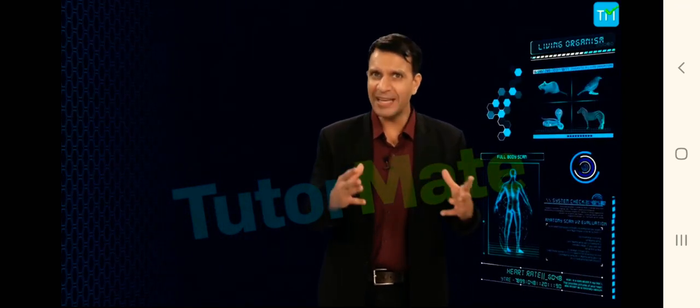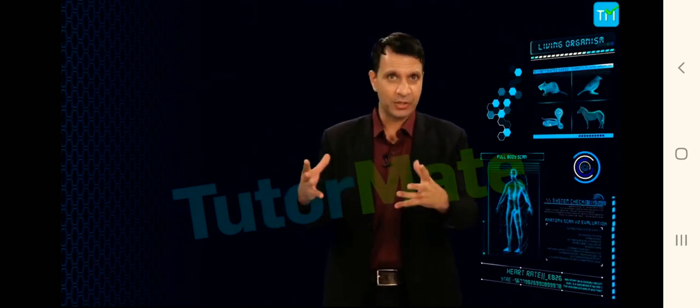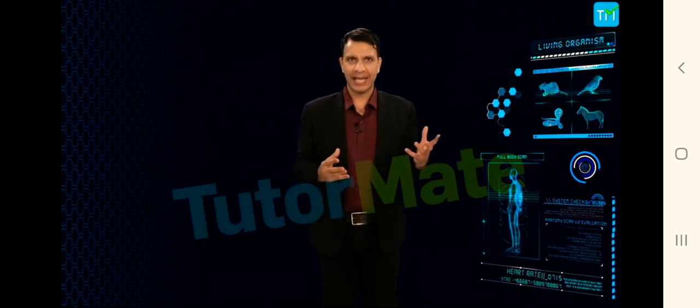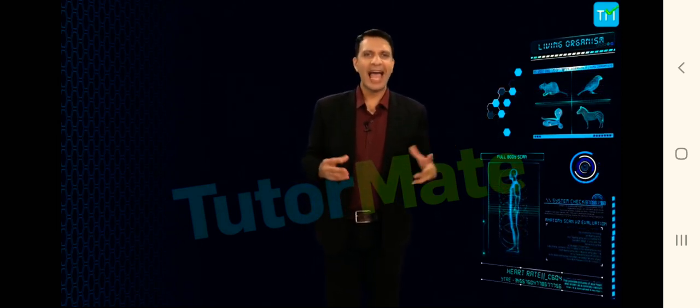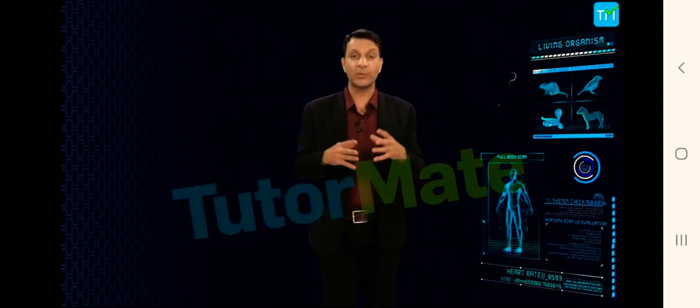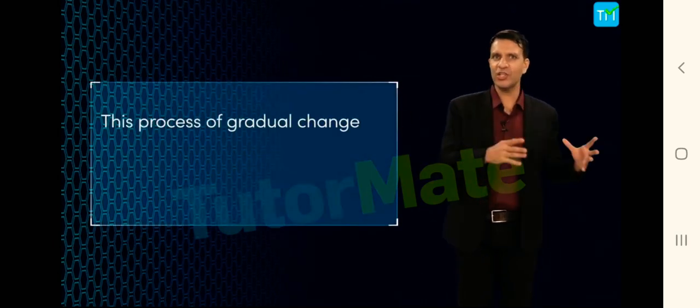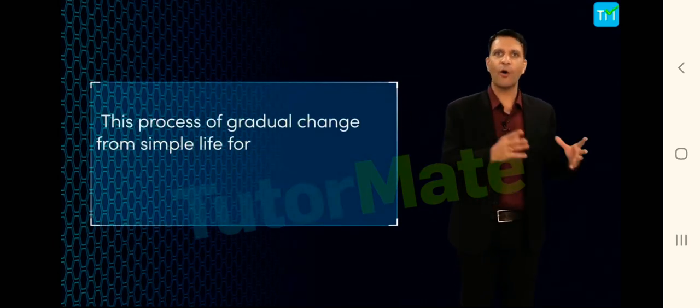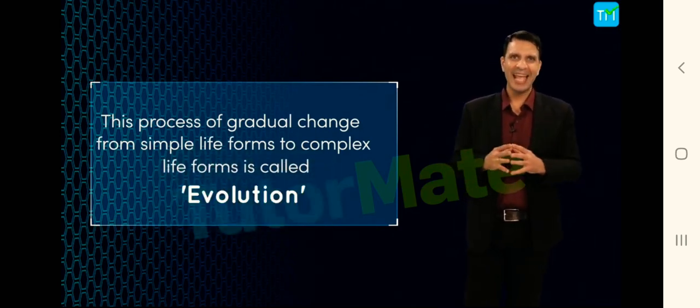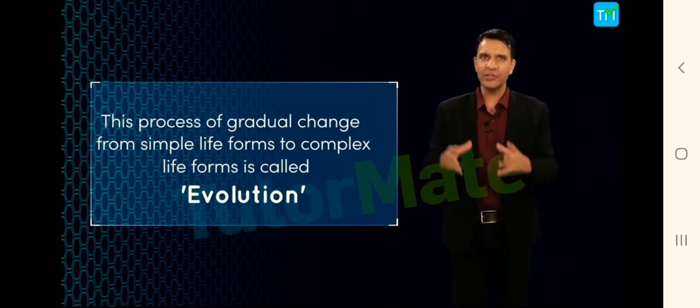They had common ancestors from which they gradually evolved into their present form. The ancestral forms were simple and are called primitive, and primitive organisms have evolved into advanced organisms which are more complex. This process of gradual change from simple life forms to complex life forms is called evolution. This is how evolution has laid an elementary stone or pathway for classification.